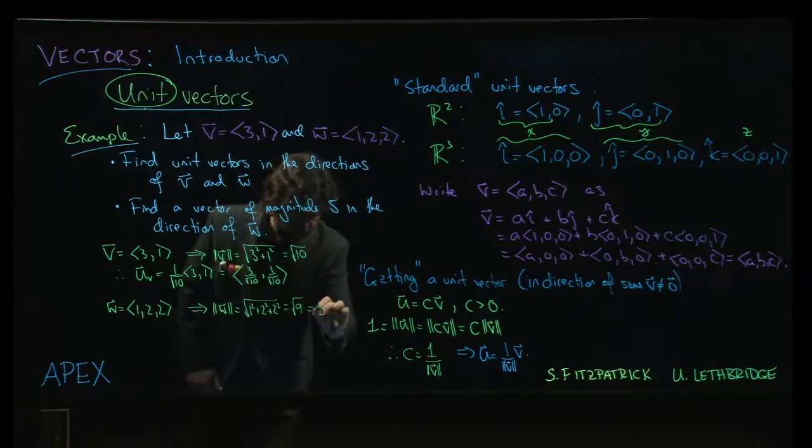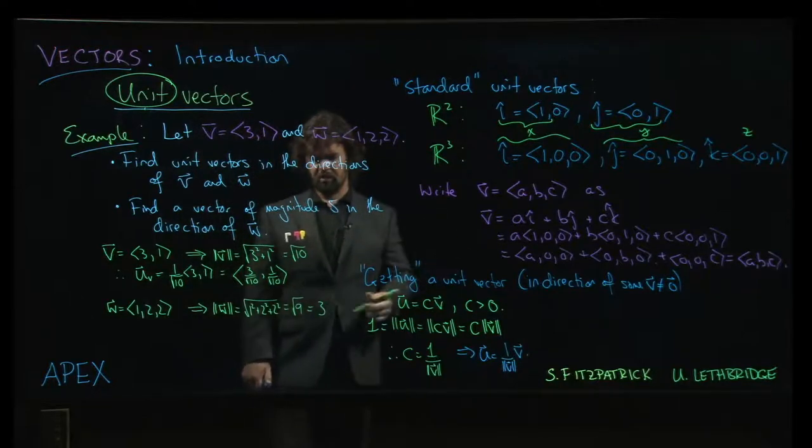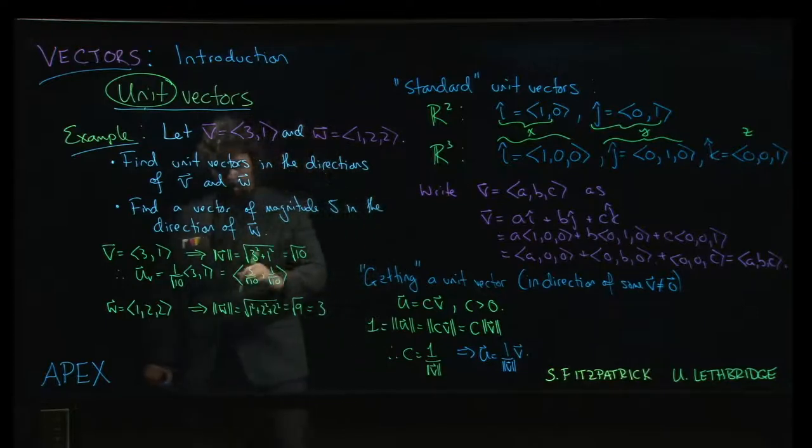Which in this case is kind of convenient. We actually get a whole number out. That usually doesn't happen when we're finding these magnitudes. We typically get a radical. This time we get 3.